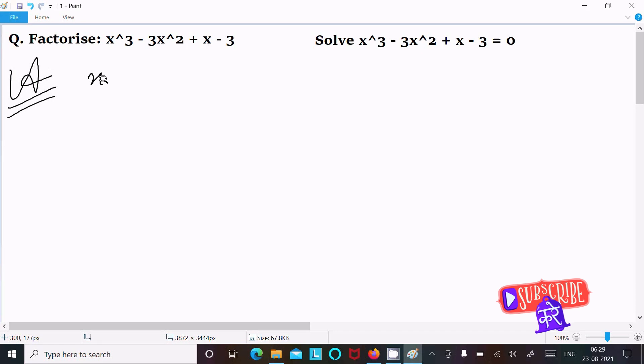So writing the given equation x³ - 3x² + x - 3. We can easily achieve the output if I put x³ and x in one side. So writing here x³ + x - 3x² - 3.